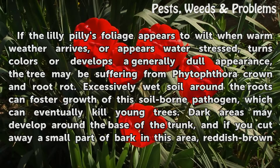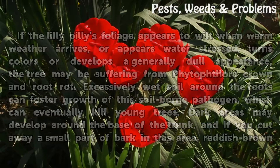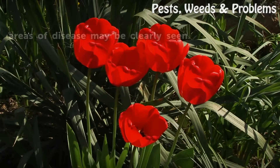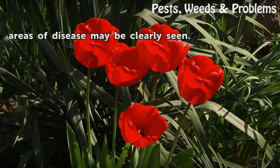Dark areas may develop around the base of the trunk, and if you cut away a small part of bark in this area, reddish-brown areas of disease may be clearly seen.